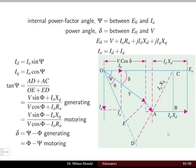To draw the phasor diagram completely and understand the operation of the salient pole machine in both generating mode and motoring mode, we need to know a few terms. The first term is the internal power factor angle, denoted by ψ, which is the angle between the induced EMF E0 and the armature current Ia. The power angle δ is the angle between the induced EMF E0 and the terminal voltage V.